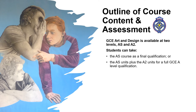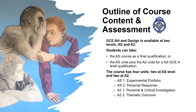This specification builds on the art and design experiences from GCSE. It is available at two levels. Students can take the AS course as a final qualification or as the first half of the A2 qualification. Students who wish to obtain a full A level qualification must also complete the second half of the course, which is referred to as A2. The course is comprised of four units, two at AS and two at A2.